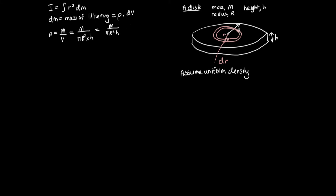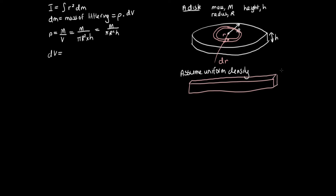Now we need to calculate the volume of just this little ring. Imagine taking the little ring and spreading it out — it becomes a rectangle. It has a width dr, a length equal to the circumference 2πr, and the same height H as the disc. So the volume dV equals 2πr·H·dr.